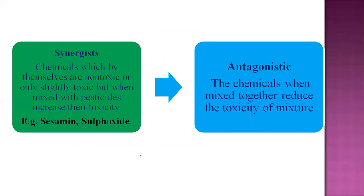Two very important terminologies used in pesticide formulation: synergist and antagonist. A synergist is a chemical compound which by itself is non-toxic or only slightly toxic, but when mixed with a pesticide compound it immediately increases the toxicity. Examples of synergists are sesame oil, sulfoxide, and piperonyl butoxide.